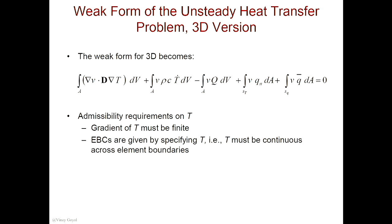The weak form for a 3D problem is the same as a 2D, except now instead of having plate thickness times DA, I'm going to have DV. And then these boundary terms will become an area where I can apply the temperature or specify the heat flux. This will also vanish in the 3D version.